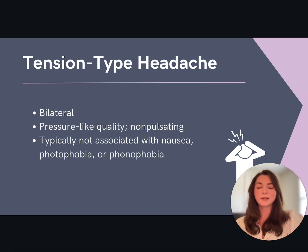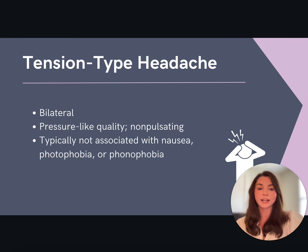Now let's talk about tension-type headaches. Tension-type headaches can be both acute or chronic in nature and are typically bilateral. They are characterized by mild to moderate pain with a dull or pressure-like quality and are non-pulsating. Oftentimes the headache is associated with muscle tenderness of the head and neck, also known as pericranial muscles. The headaches are not aggravated by physical activity and are not typically associated with nausea, photophobia, or phonophobia.